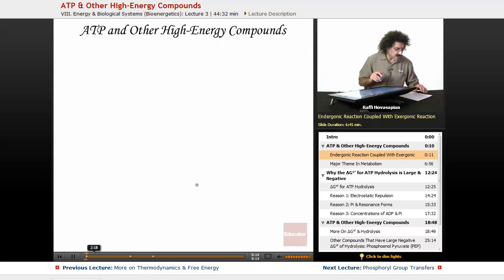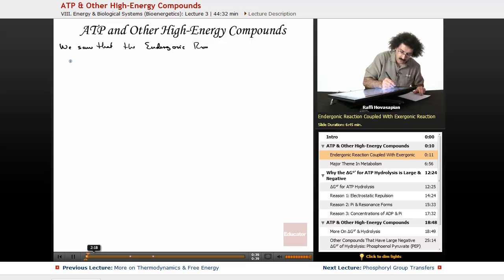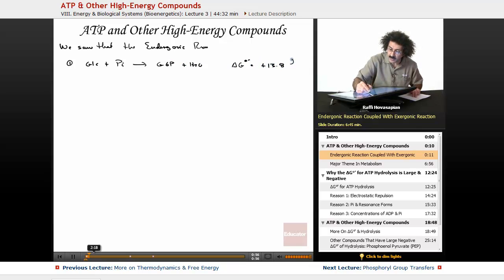We saw previously that an endergonic reaction can actually be coupled with an exergonic reaction to run the endergonic reaction under circumstances where it wouldn't otherwise go. Let's start with the endergonic reaction, number one: glucose plus inorganic phosphate goes to glucose 6-phosphate plus H2O. The delta G for this one was positive 13.8 kilojoules per mole.